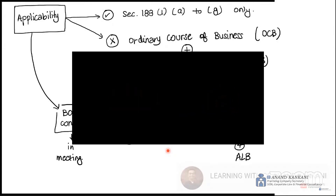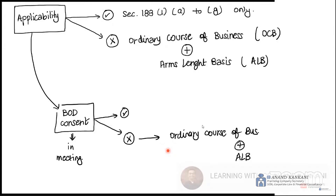From Section 188, Sub-section 1, Clause A to Clause G — you have to see if it is ordinary course of business and on an arms length basis. If it is, then there is no problem. The board of directors' consent you will always take, but if it is ordinary course of business and on arms length basis, then you will not require BOD approval.